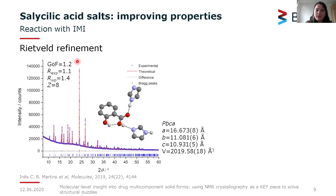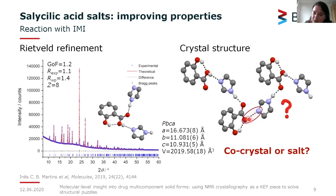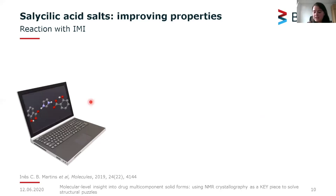Moving to the first example: salicylic acid combined with the imidazolium co-former. Here we have the Rietveld refinement plot. The difference curve in grey shows good fitting between the experimental and theoretical powder patterns, also confirmed by the R-values. We have an orthorhombic unit cell. Looking at the crystal structure, we have a zigzag interaction composed of salicylic acid and imidazolium molecules. We need to understand whether the labile proton is on the oxygen of salicylic acid or on the nitrogen position, and so we move to DFT and solid-state NMR.